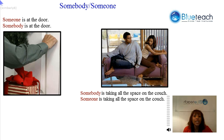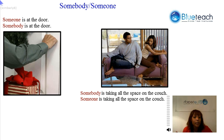We can't use 'anybody' in this situation because 'anybody is at the door' doesn't necessarily mean that there is a person there. It means there's a possibility that there could be a person at the door, but we're not sure that there actually is somebody there.